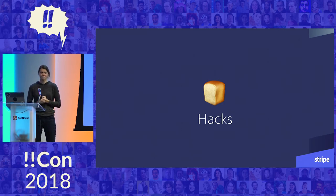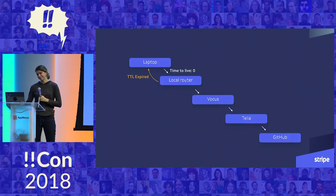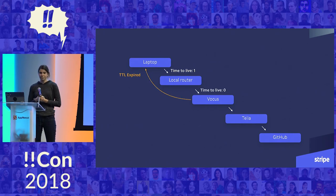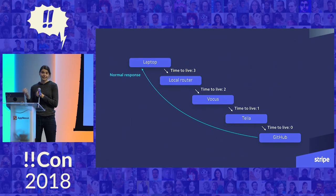So let's go back to those breadcrumbs. Let's say you want to have breadcrumbs of where your request has been, but you don't want to implement anything special in the protocol. Well, you can send a packet to GitHub but set a time to live of zero. It's going to make it one step, and immediately the router will send you back an expired message. So you can print that the router who sent you that expired message was the first step. Then you send a counter with one — this time you'll make it to Vocus one step further, print the message. We'll do that for Telia as well, and then when we get to GitHub, we'll get a normal response back, print that we made it there, how long it took, and then stop incrementing that counter. And that's actually how Traceroute works.